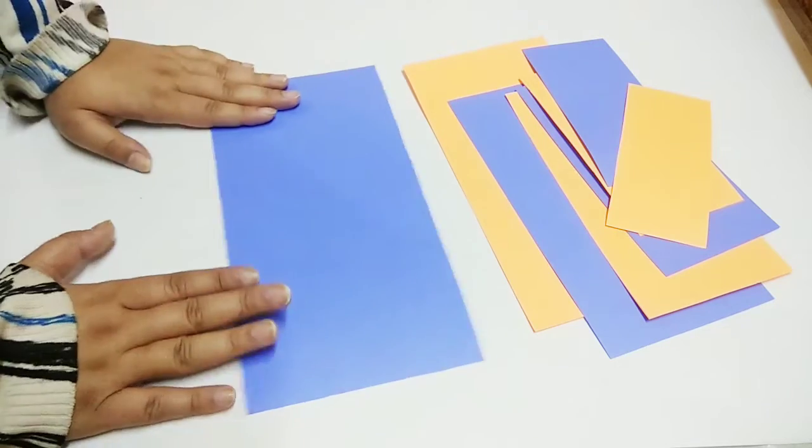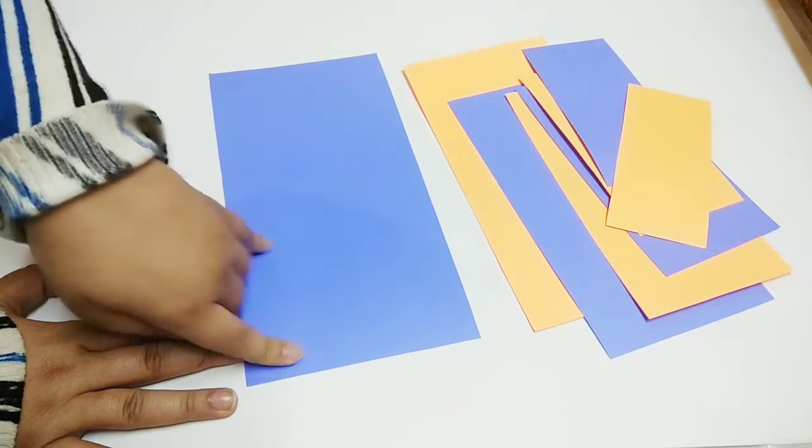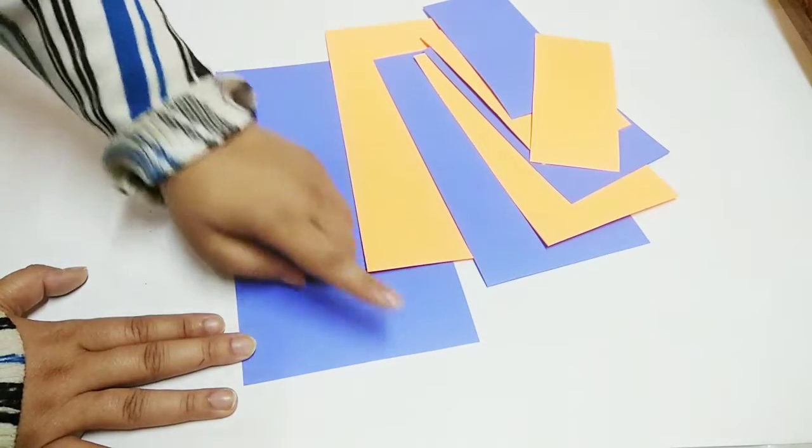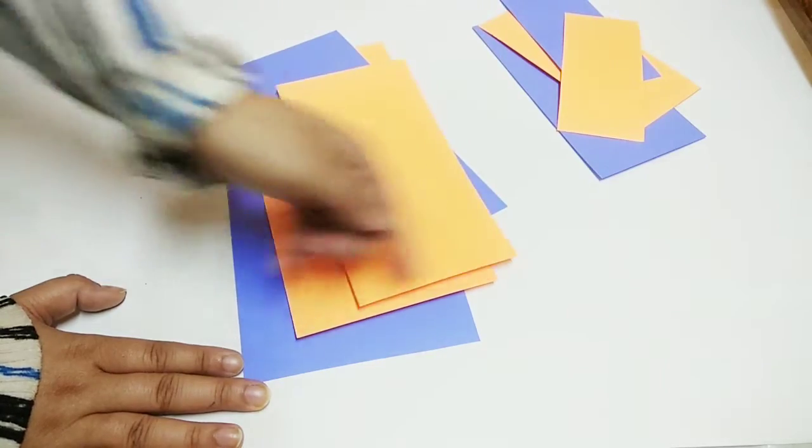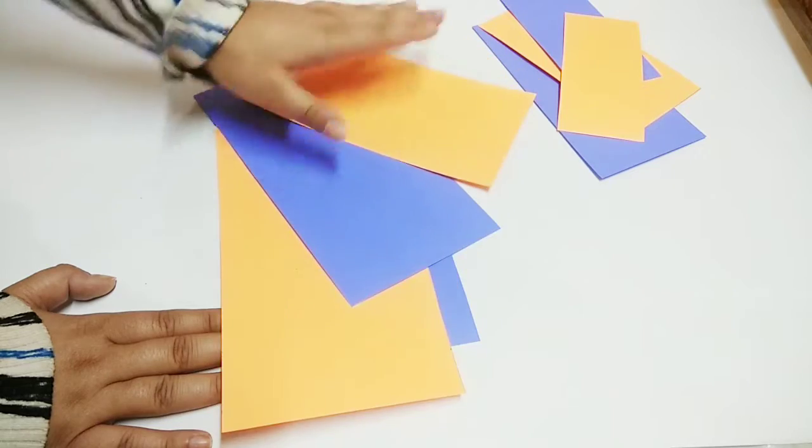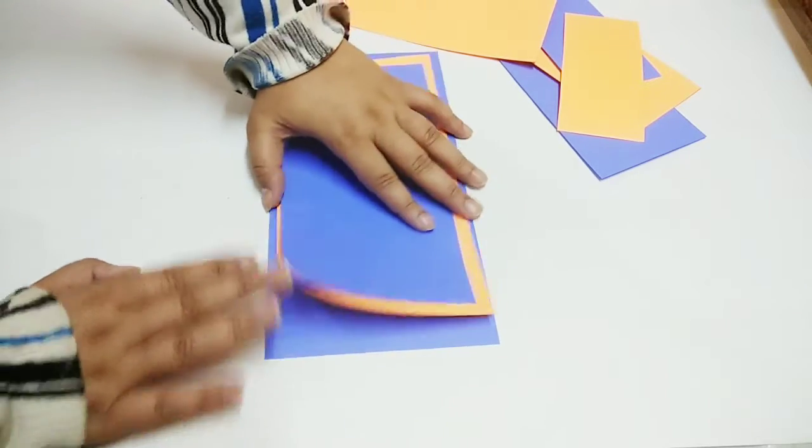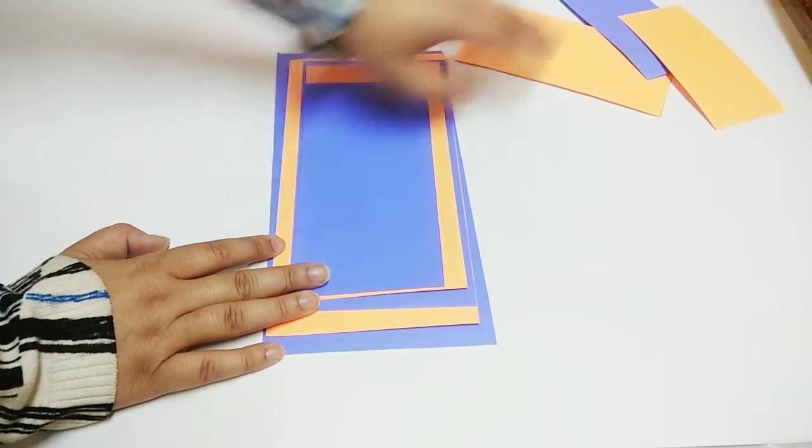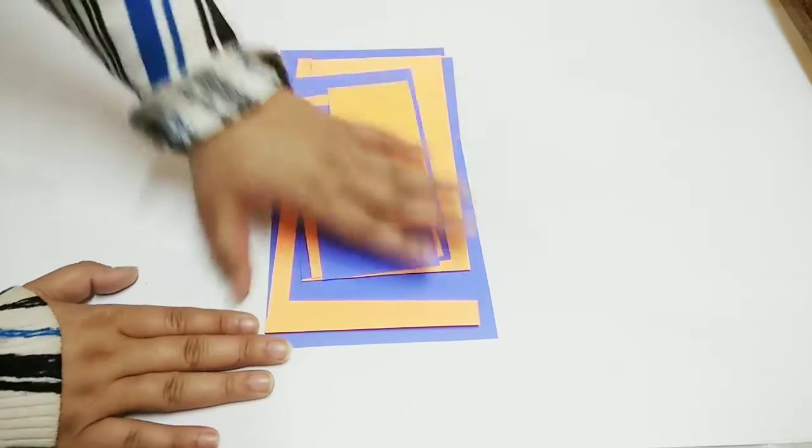In this you have to take two color sheets and you will alternately cut. The biggest sheet is 26 cm by 13 cm. Basically the length, I have kept half the length. The measurements are 16 into 8, 14 into 7 and cut all the parts in this way.